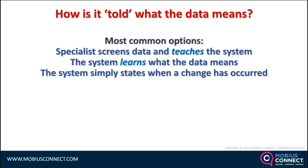The system might simply state that there's a change — it's learned what normal looks like, and when the data begins to change it can say, 'There is a change — send in a specialist or a technician, or just pull the machine out and find out what's wrong physically,' especially if you've got standby equipment.